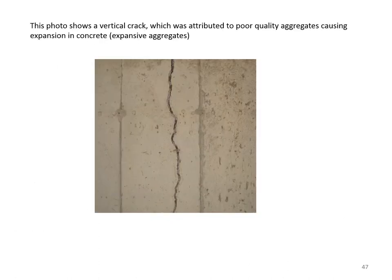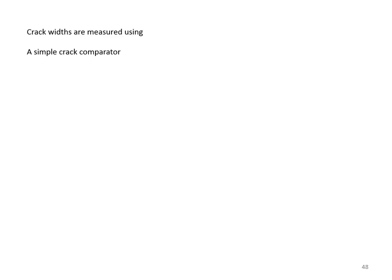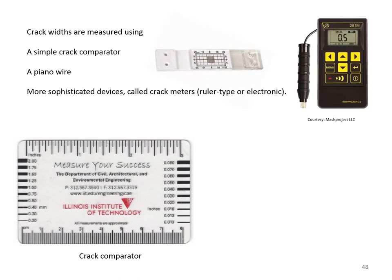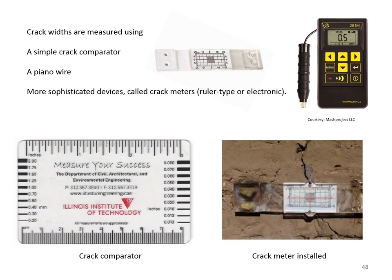This photo shows a vertical crack attributed to poor quality aggregates causing expansion in concrete—an example of a crack because of expansive aggregate. Crack widths are measured using a crack comparator (the size of a credit card), a piano wire, or more sophisticated crack meters such as ruler-type or electronic ones. Crack meters are left installed for extended periods to ensure the crack is stable.